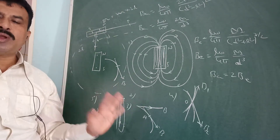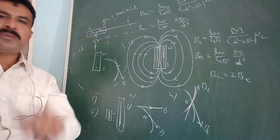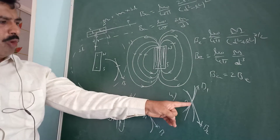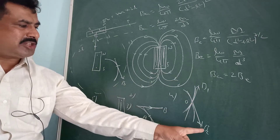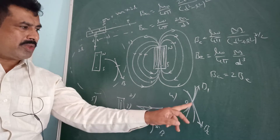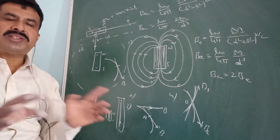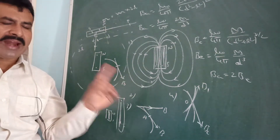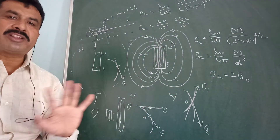If magnetic field lines were to intercept at a point, then at that point one tangent would give the direction of magnetic field B1 and another tangent would give direction B2. Since a magnetic field can only have one direction at any point, this is not possible — so magnetic field lines never intercept.